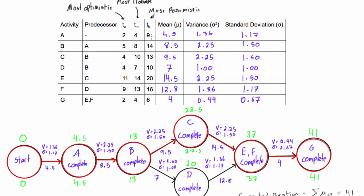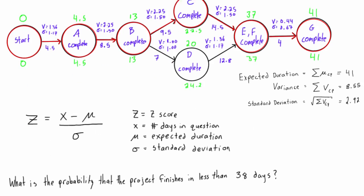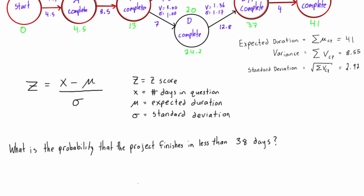But we know that it could be as bad as nine days, or it could be as good as two days. It's just somewhere in this range. So what we want to do is figure out what is the probability that our project will finish in less than 38 days.